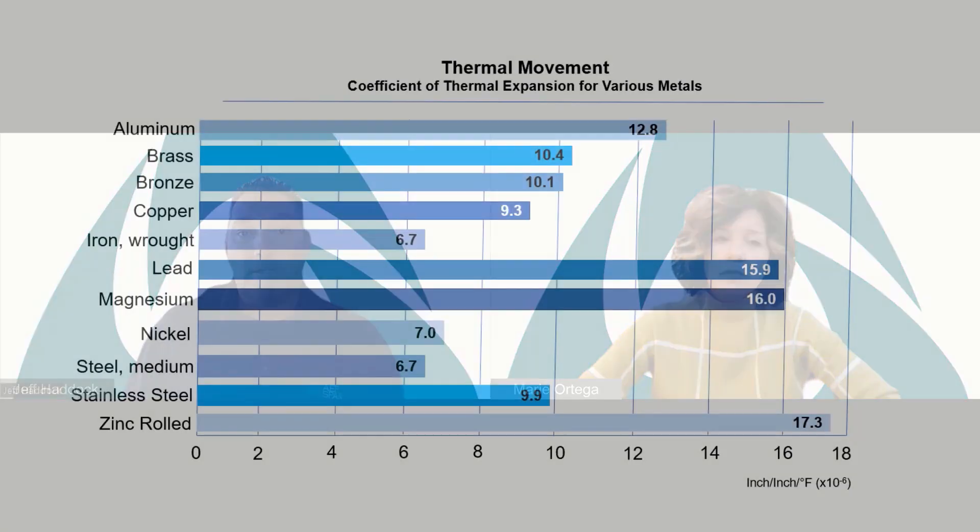Metals do not expand and contract at the same rates, which is why it's very important to know what you're working with to ensure your roof is properly designed to accommodate for thermal movement. As you can see in this chart, various metals move at different rates. Let's compare the two most common materials used for roofing applications.